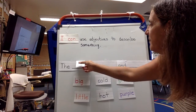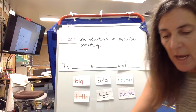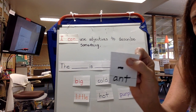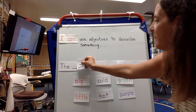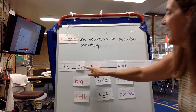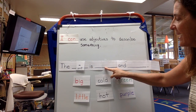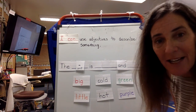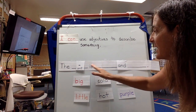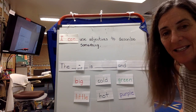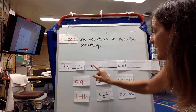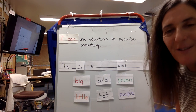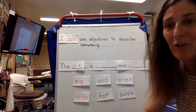Watch how I can do that. How about this ant? See the ant? I might say the ant is black and fast. I don't have those words here, but those are good adjectives. The ant is black and fast. I could say the ant is little and cold. You can use whichever adjectives work for your sentence.